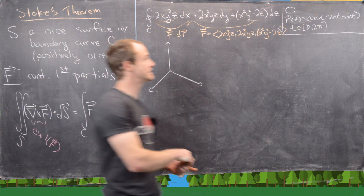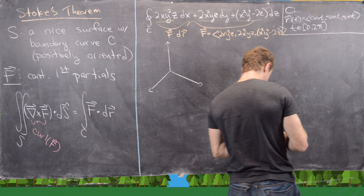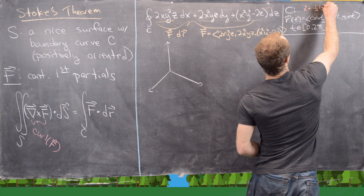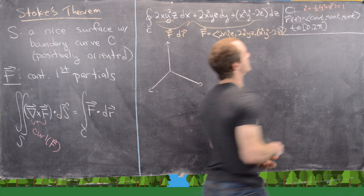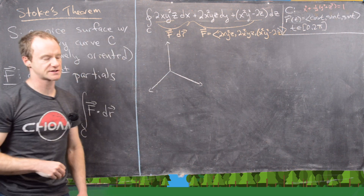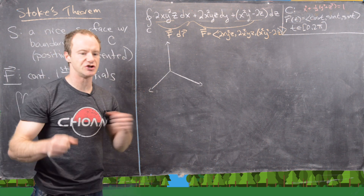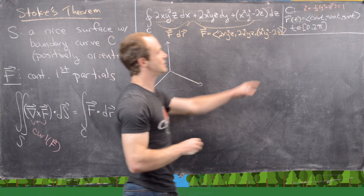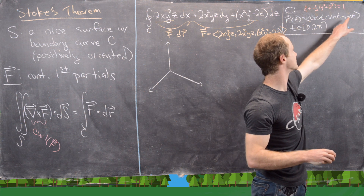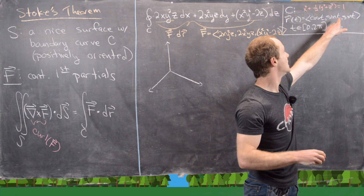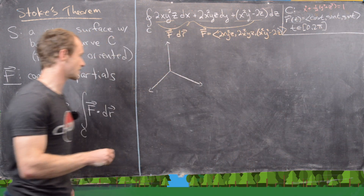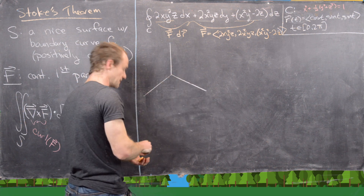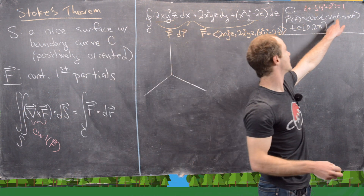Our vector field F is (2xy²z, 2x²yz, x²y² − 2z). If we let the x, y, z components be cos t, sin t, sin t, we actually get x² + ½y² + z² = 1, since we have two copies of sine there. So this is indeed an ellipse, and notice it's embedded inside the plane y = z because the y component equals the z component in the parametrization.